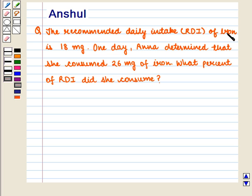i.e., RDI of iron is 18 mg. One day, Anna determined that she consumed 26 mg of iron.